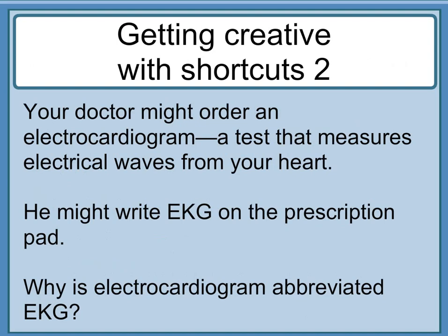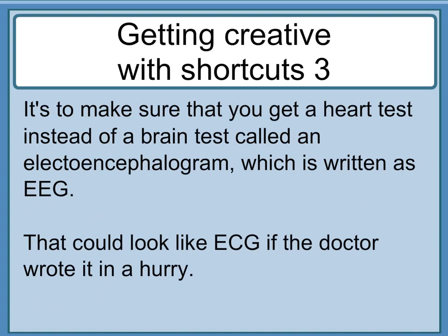Your doctor might order an electrocardiogram, a test that measures electrical waves from your heart. He might write EKG on the prescription pad. Why is electrocardiogram abbreviated EKG? It's to make sure that you get a heart test instead of a brain test called an electroencephalogram, which is written as EEG — because ECG could look like EEG if the doctor wrote it in a hurry.